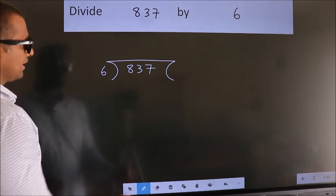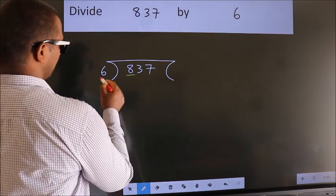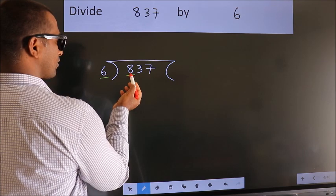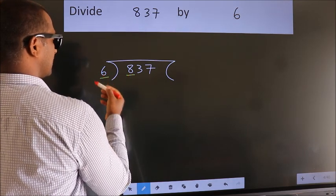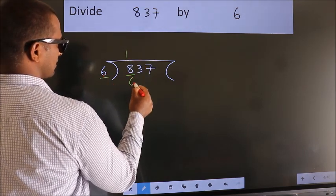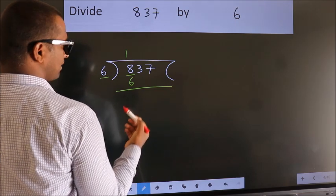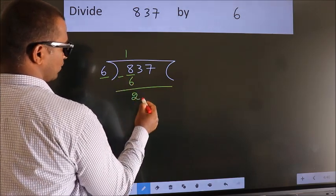Next, here we have 8, here 6. A number close to 8 in the 6 table is 6 times 1 is 6. Now we should subtract. We get 2.